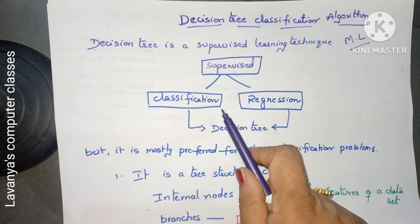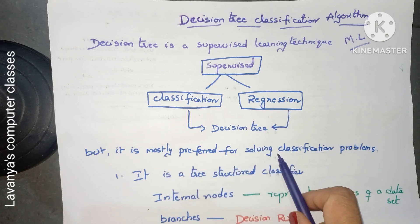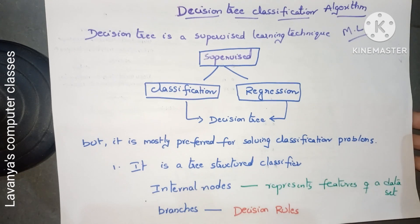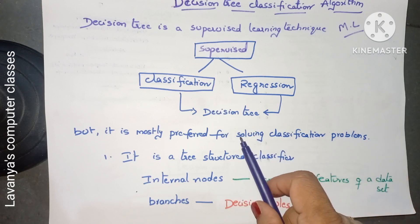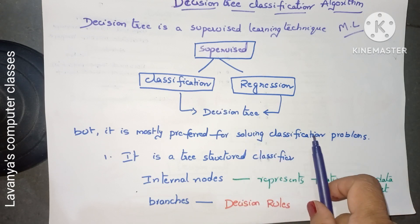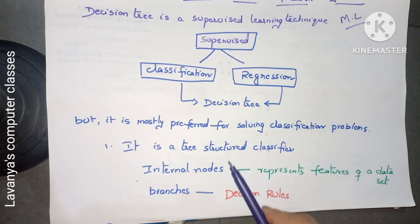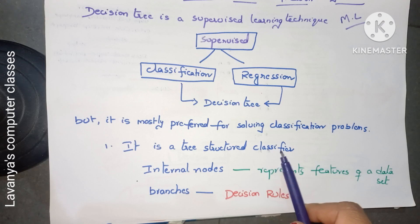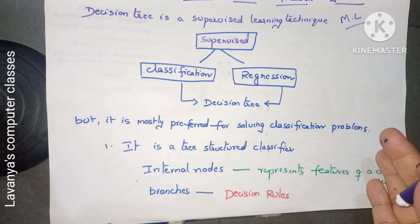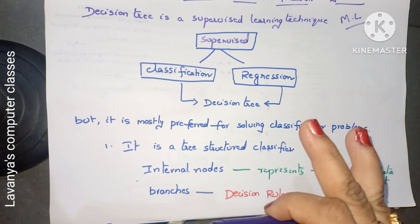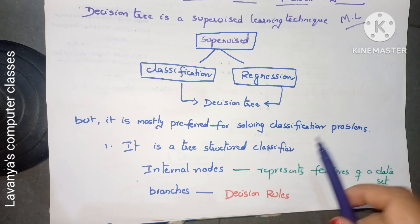Decision tree can be used for either algorithm, but it is mostly preferred for solving classification problems. In the name itself, it is a tree-structured classifier algorithm. It is divided into classifications — either true or false — and depends upon the decisions, it is classified into many categories.